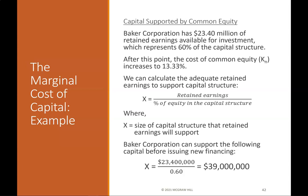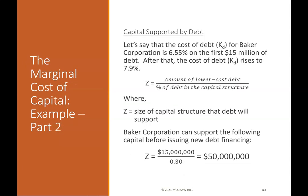Baker Corporation can support the following capital before issuing new financing. For capital supported by debt: the cost of debt for Baker Corporation is 6.55% on the first $15 million of debt. After that, the cost of debt rises to 7.9%. Z = amount of lower-cost debt / percentage of debt in the capital structure, where Z is the size of capital structure that debt will support. Z = $15,000,000 / 0.30 = $50,000,000.